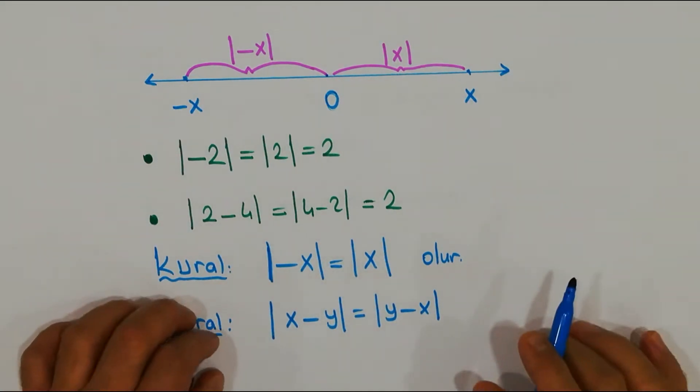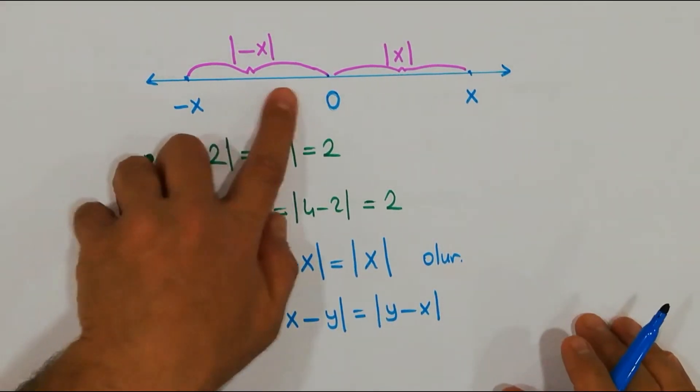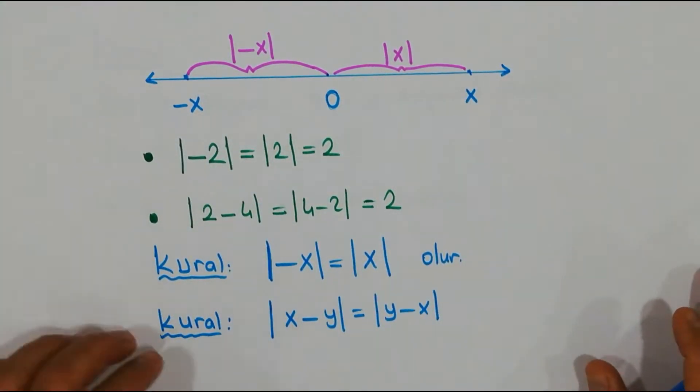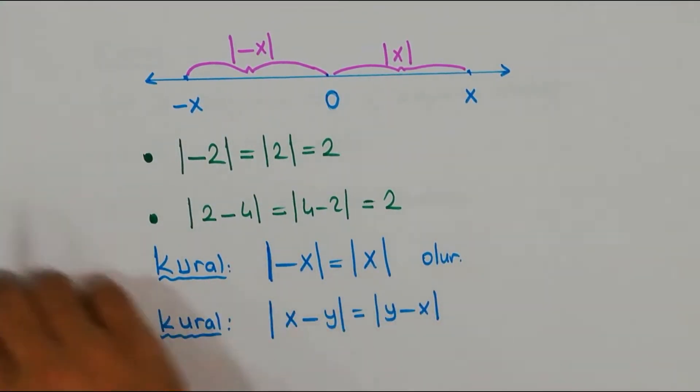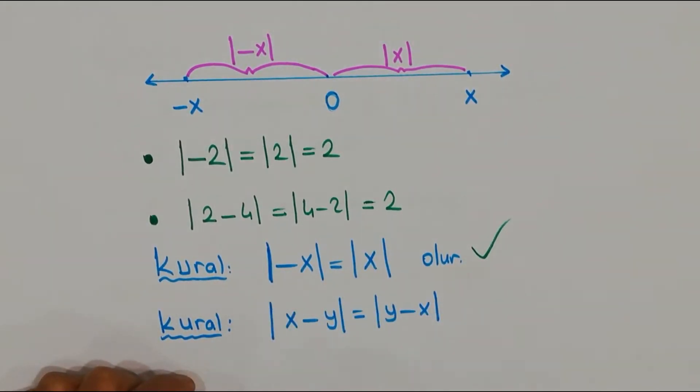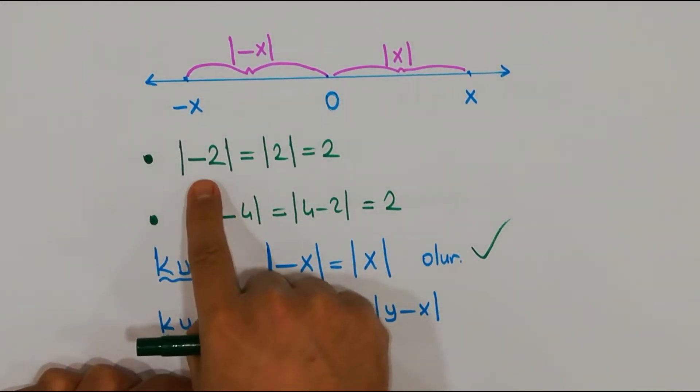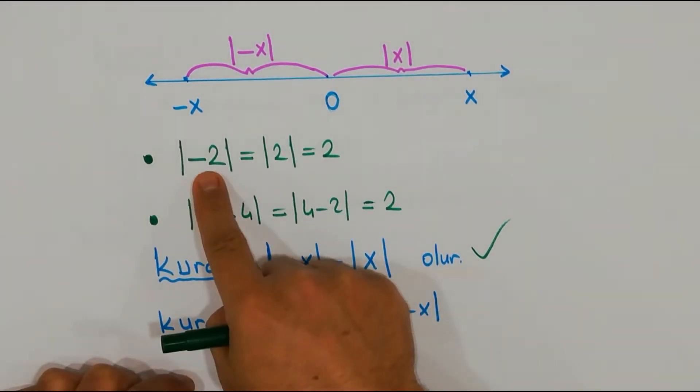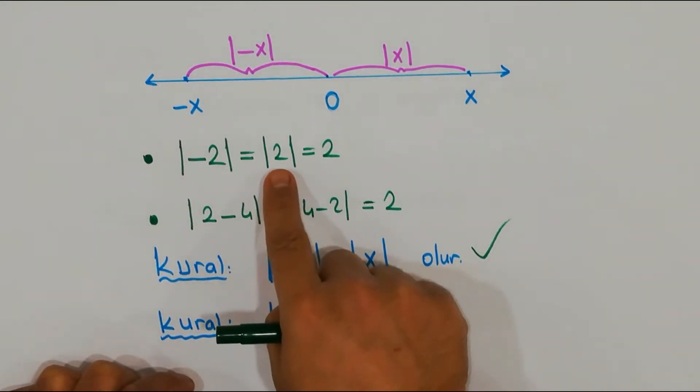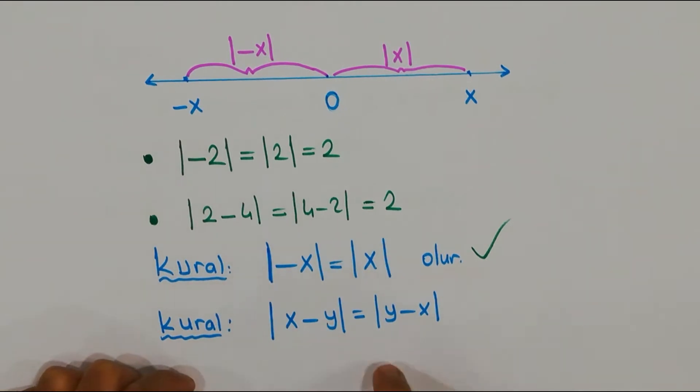Bunu da ölçtünüz, eksi x birim. Bakın, bunu ölçtünüz değerli arkadaşlar. Yine pozitif bir birim gelecek değil mi? Biz bu uzaklığı da eksi x'in mutlak değeri diye söyleyeceğiz. Şu mesafeyle şu mesafe aynı mı? Kesinlikle aynı. O halde kural geliyor zaten.